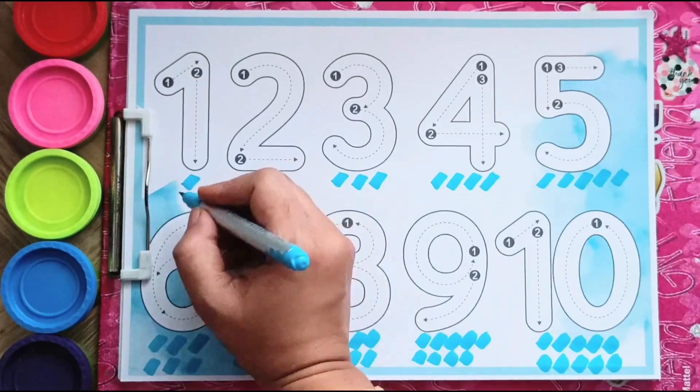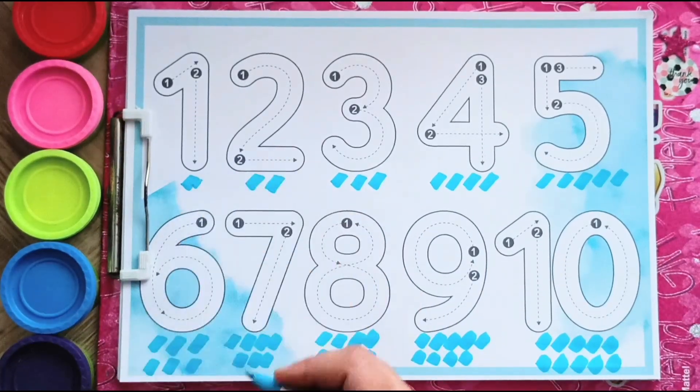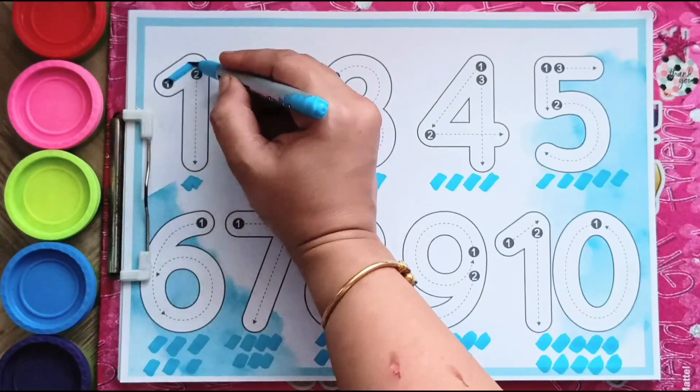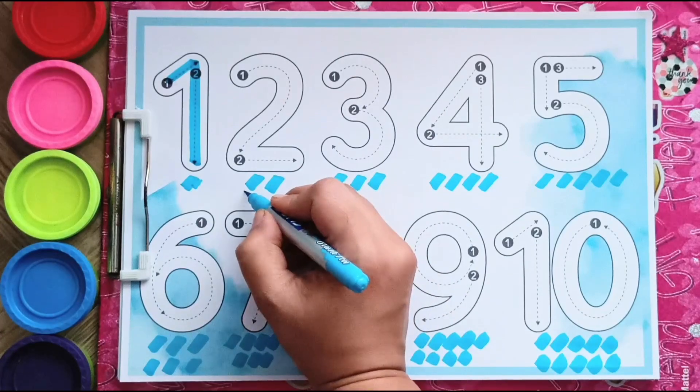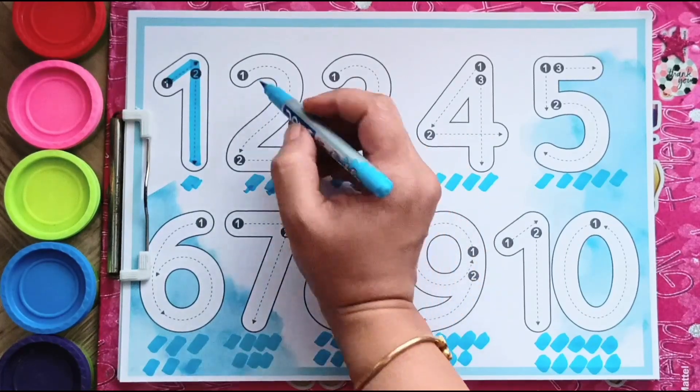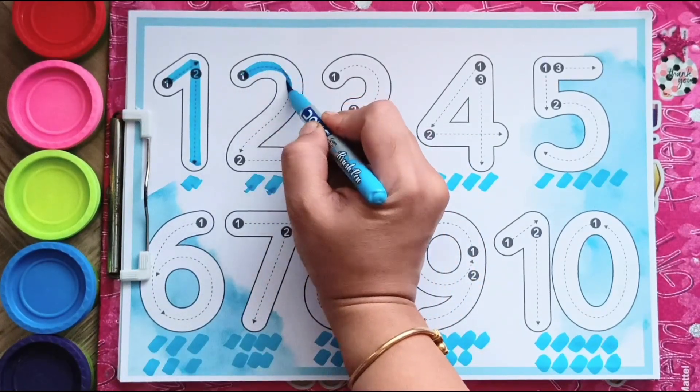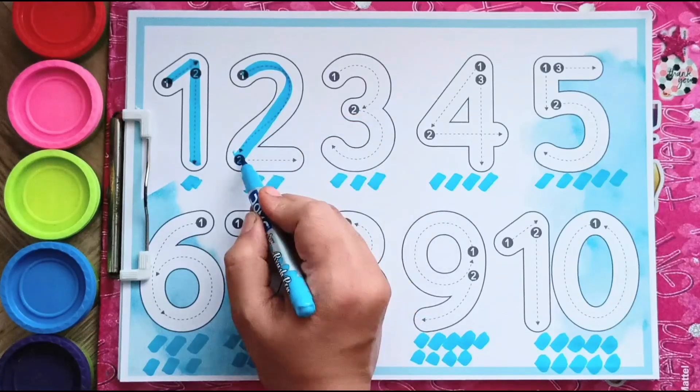Let us start. This is 1 dot. So, our number is 1. One, two. Two.